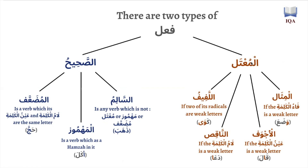Then there's a verb that is mu'atal, which is the opposite of the verb that is sahih — it is a verb that has a weak letter inside: a waw, alif, or ya. That waw, alif, or ya is either going to be in the first radical (the fa-kalima), the middle radical (the ayn-kalima), the third radical (the lam-kalima), or two of its radicals will be weak letters, in which case they're called lafif.